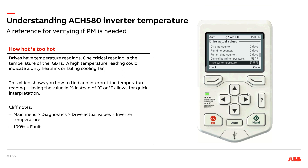Again, 100% equals fault. Usually you're going to get three to 5% below that is when the warning is going to kick in — it depends on the frame size of the drive. So somewhere around 95%, 96%, or 97%, depending on the drive and how it's designed, is when you're going to see a warning threshold kick in.